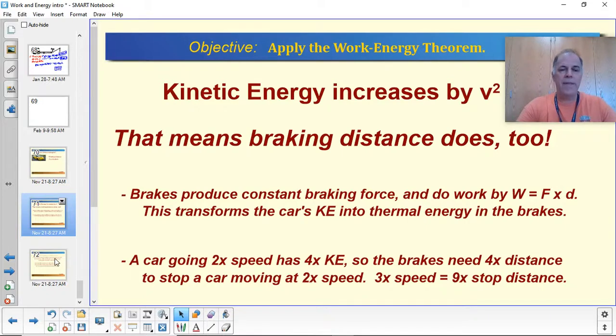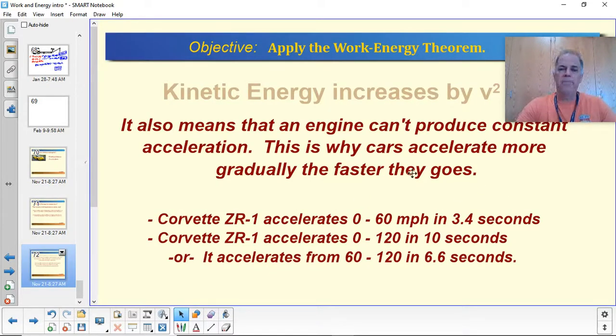Now this one is more academic. This is more about just straight physics. But since kinetic energy increases by the square of the speed, this also means that a car engine cannot produce constant acceleration. Now you may or may not have noticed this or been conscious of this. But if you think about it, it's true. Cars accelerate more gradually, the faster they're going. And you see this in races on TV and in TV shows and all sorts of places. And even in your own experience, if you're trying to accelerate quickly to get onto the freeway or something like that, the faster you're going, the more gradually your speed increases. The acceleration drops off as your speed goes up. And that's not a flaw of the engine. It's not because of air resistance or anything like that. It's because of the nature of kinetic energy.